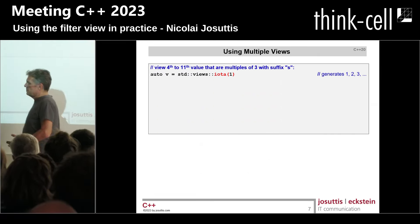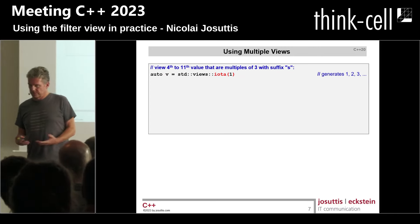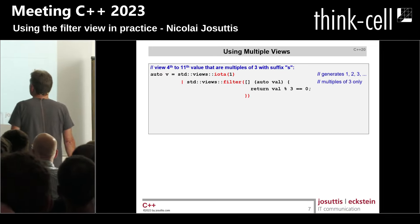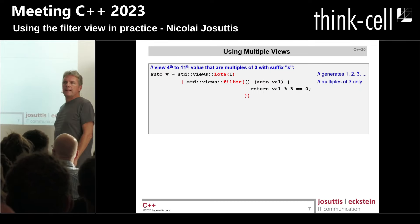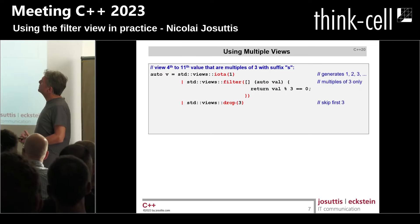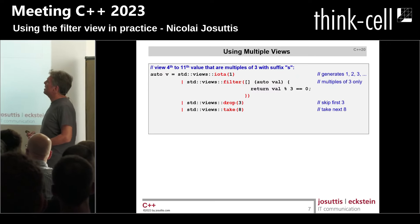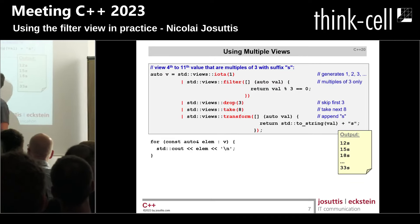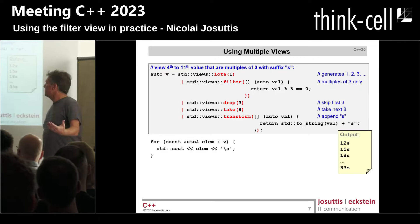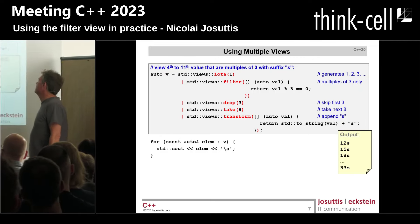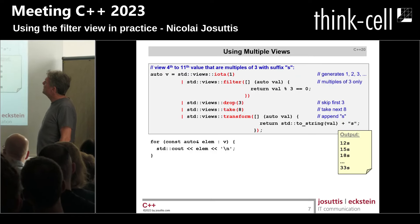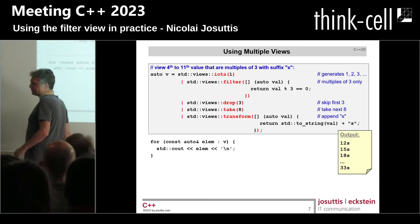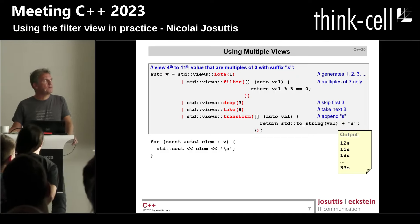Last example: let's use an IOTA view, a cheap container to generate numbers starting from one. We apply a filter to allow only multiples of three, drop the first three elements, take the next eight elements, apply a transformation, and pass the whole view to a range-based for loop. The result is 12, 15, 18... up to 33 — eight elements, first three skipped, only multiples of three. Great technology.